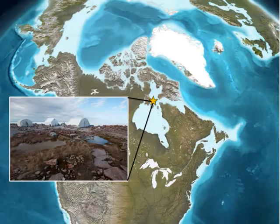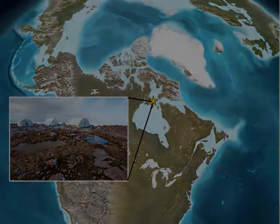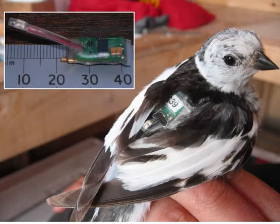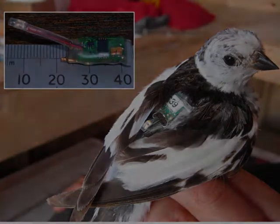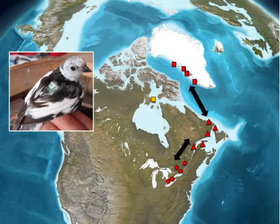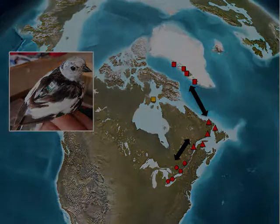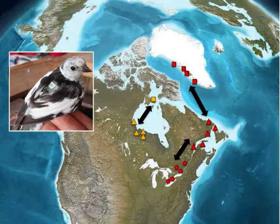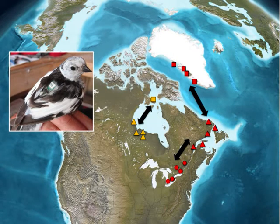I deployed miniature light-level geolocators at East Bay Island in Nunavut, Canada, working with Dr. Oliver Love at the University of Windsor and Dr. Grant Gilchrist of Environment Canada. Recovery of these units in 2011 allowed us to trace the entire annual migratory cycle from East Bay through migration along the southwestern shores of Hudson's Bay.